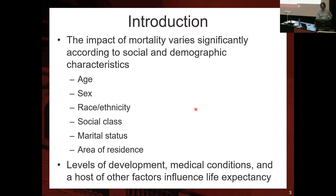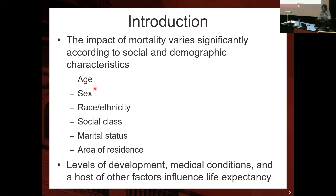The impact of mortality varies significantly according to social and demographic characteristics. Older people have higher chances of dying. Men have higher chances of dying. African Americans in the US have higher chances of dying than non-Hispanic whites. People in lower socioeconomic status have a higher chance of dying than those in higher socioeconomic status. Unmarried people have higher chances of dying than married people. Where you live also influences your chance of dying. Whenever examining mortality, it's good to look at variations by age, sex, race, ethnicity, social class, marital status, and place of residence.